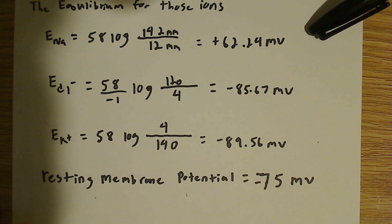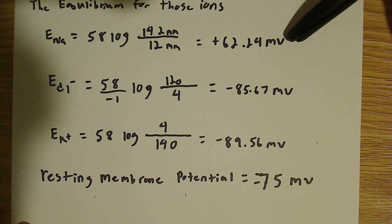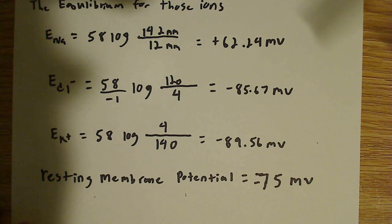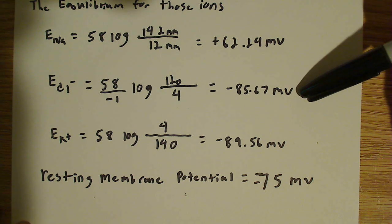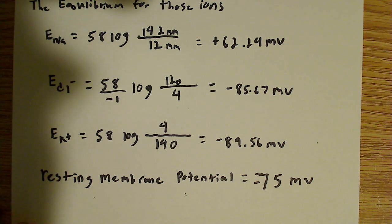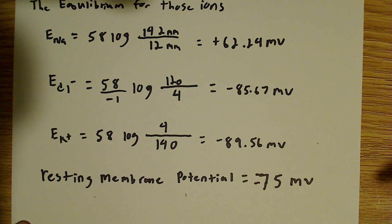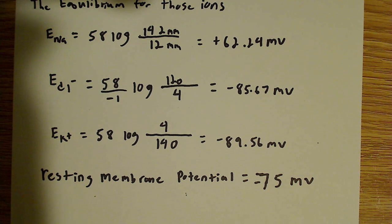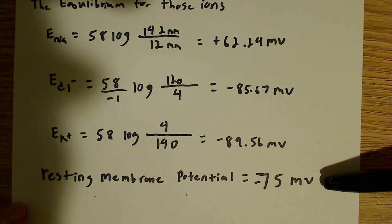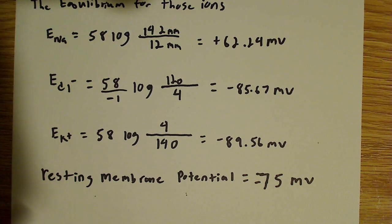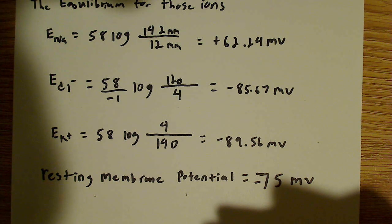To summarize: sodium ions have an equilibrium potential of plus 62.24 millivolts, so compared to the resting membrane potential of negative 75, they flow into the cell. Chloride ions have an equilibrium of negative 85.67 millivolts — more negative than negative 75 — so they also flow into the cell, making it more negative. Potassium has an equilibrium of negative 89.56 millivolts; to get more negative, potassium ions must flow out of the cell.